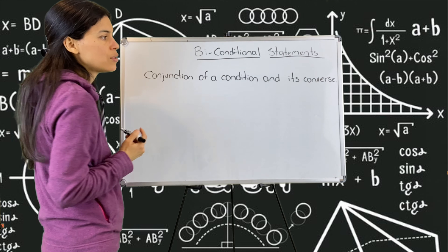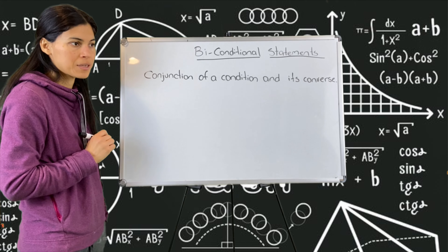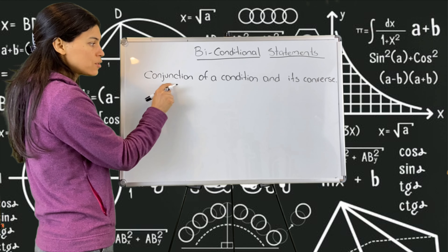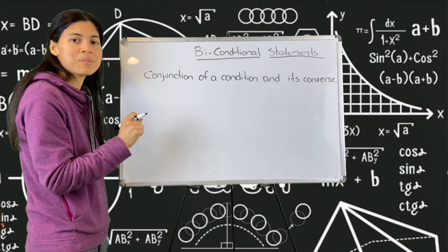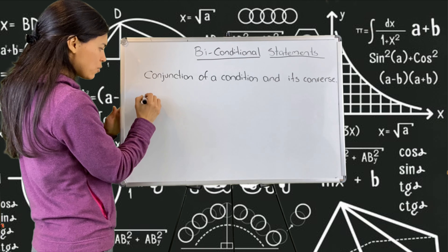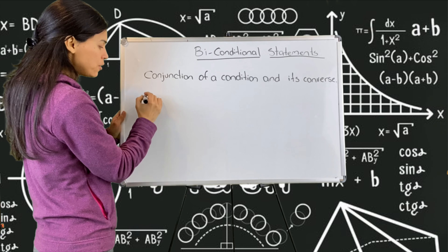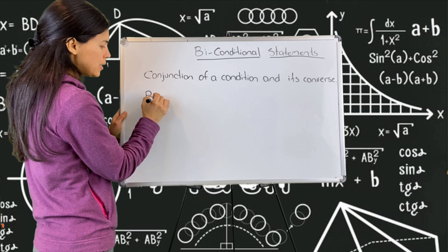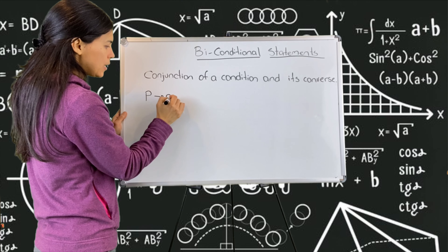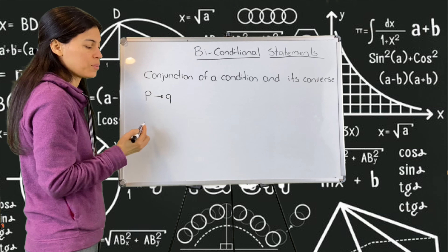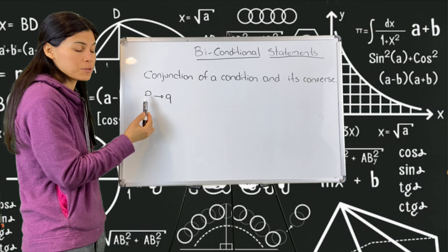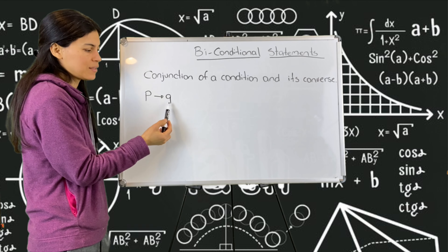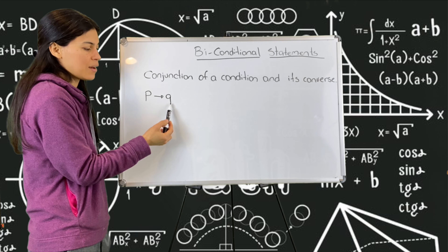For today's lesson, you will need a pencil and your worksheet. That's all that you need — and yourself. Today we're going to see biconditional statements. This is right where we left before we took the break. The definition you had to fill in on your worksheet is: a conjunction of a condition and its converse.